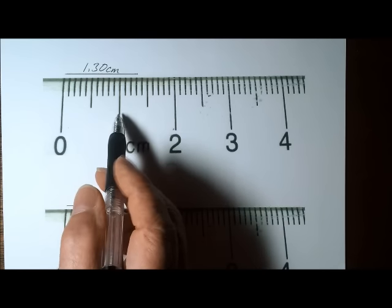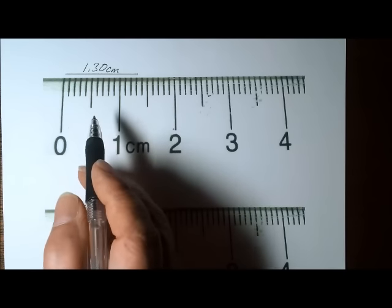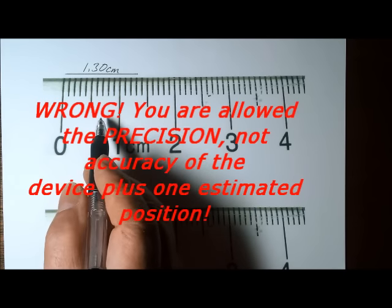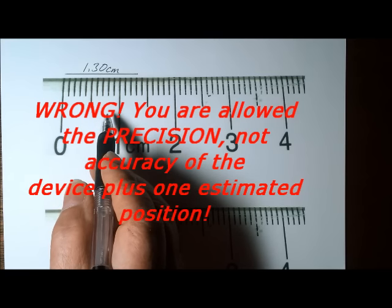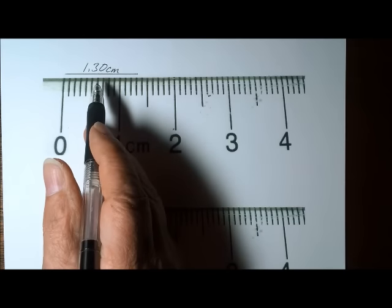The rule for measuring with a ruler is that you have the accuracy of the measuring device plus one estimated position, and that last position can be a zero or a five.